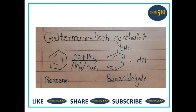Then Gattermann-Koch reaction. In the Gattermann-Koch reaction, benzene is treated with carbon monoxide in an acidic medium in presence of anhydrous aluminium chloride to give benzaldehyde. In this example, benzene is converted into benzaldehyde in presence of CO, HCl, and AlCl₃. This is the Gattermann-Koch reaction.